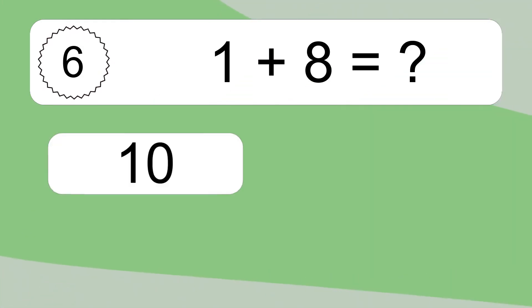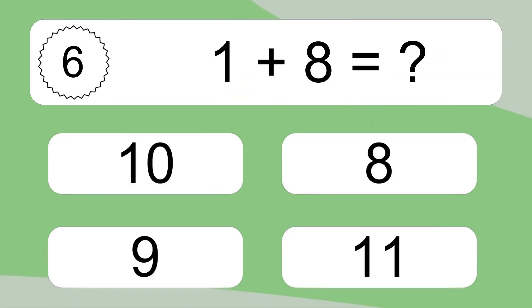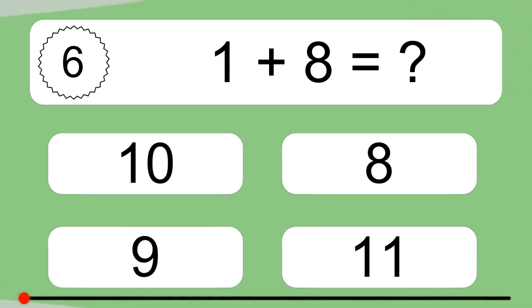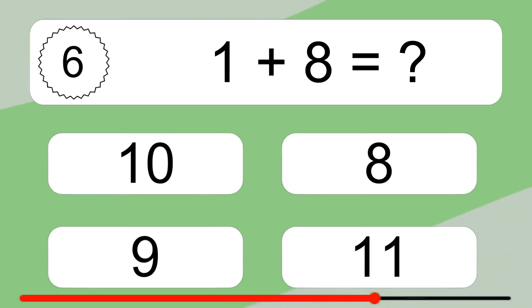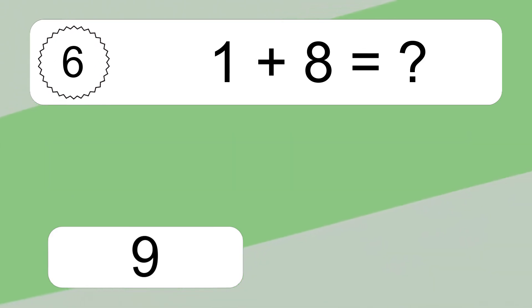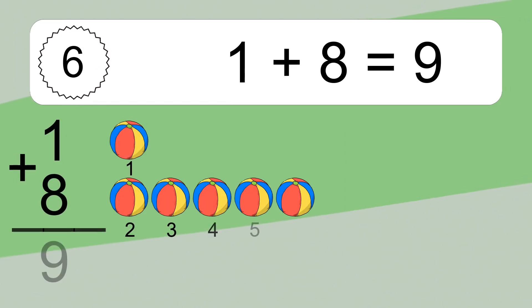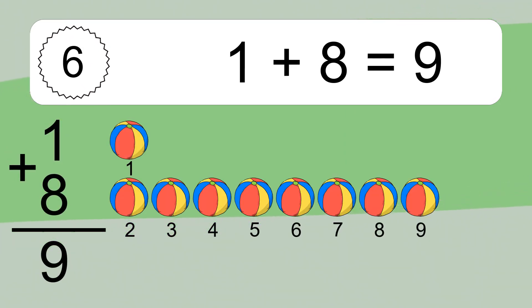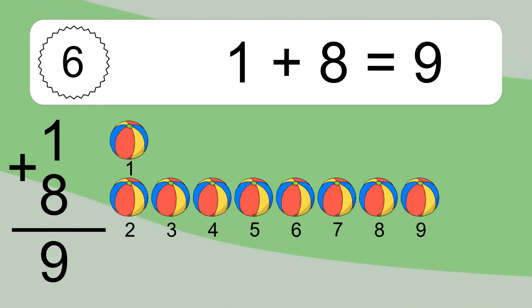1 plus 8 equals what? 1 plus 8 equals 9. Let's count it: 1, 2, 3, 4, 5, 6, 7, 8, 9.